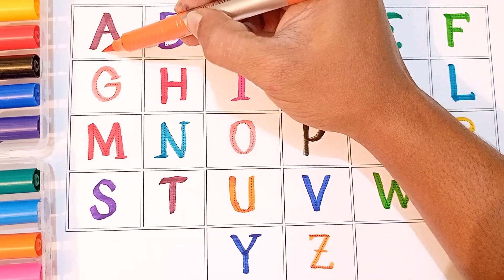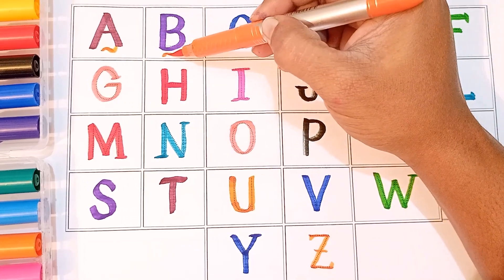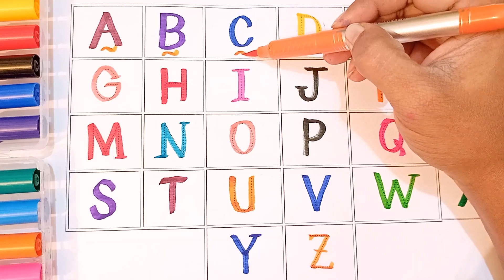Let's revise, okay? A, A for apple. B, B for ball. C, C for cow. D, D for dog.